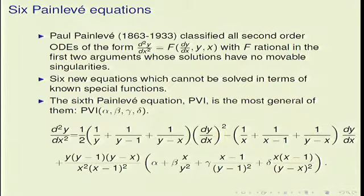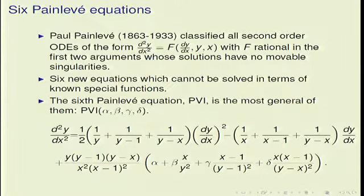These six new equations could not be solved in terms of non-special functions. I will talk about the sixth Painlevé equation, which is the most general of these six new equations, because the other five can be obtained by different reductions and limiting procedures from the sixth. It is written here and is actually a family of equations parameterized by four parameters: alpha, beta, gamma, and delta.